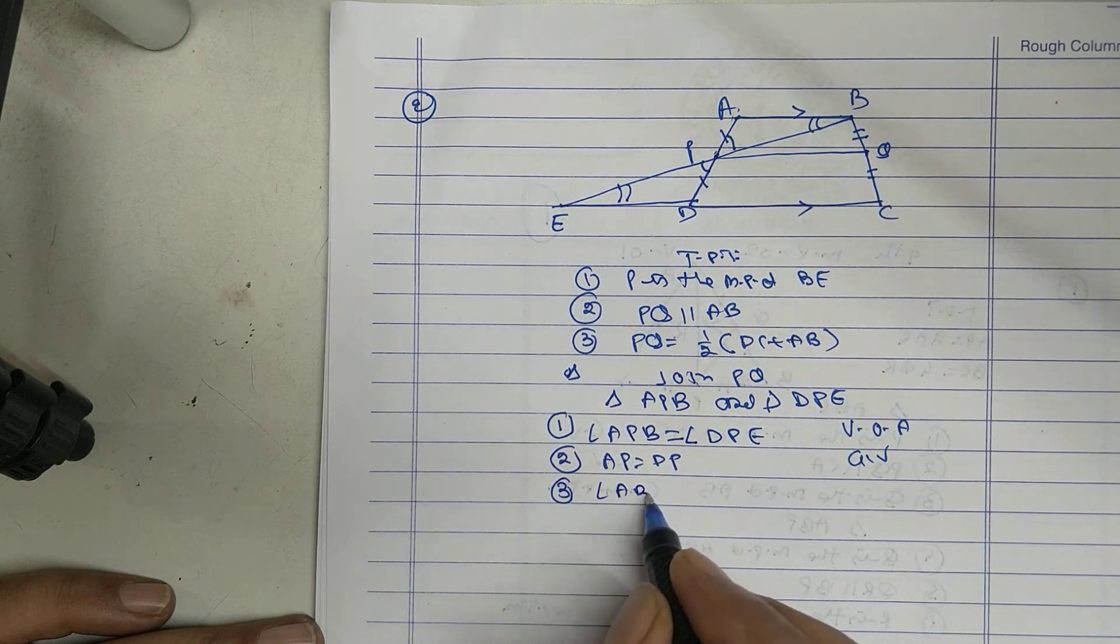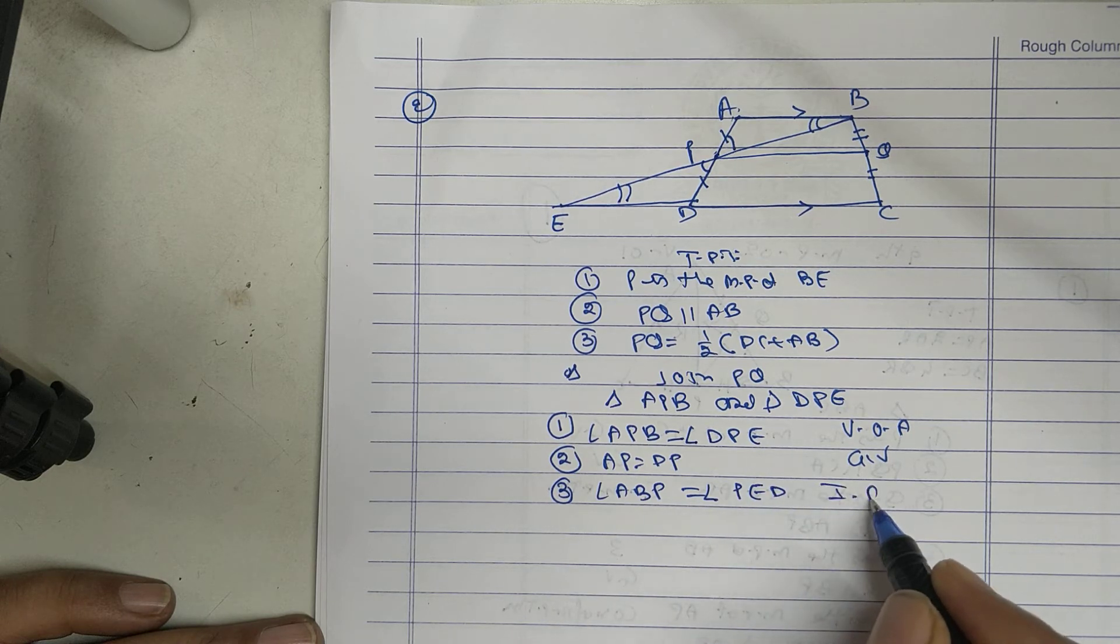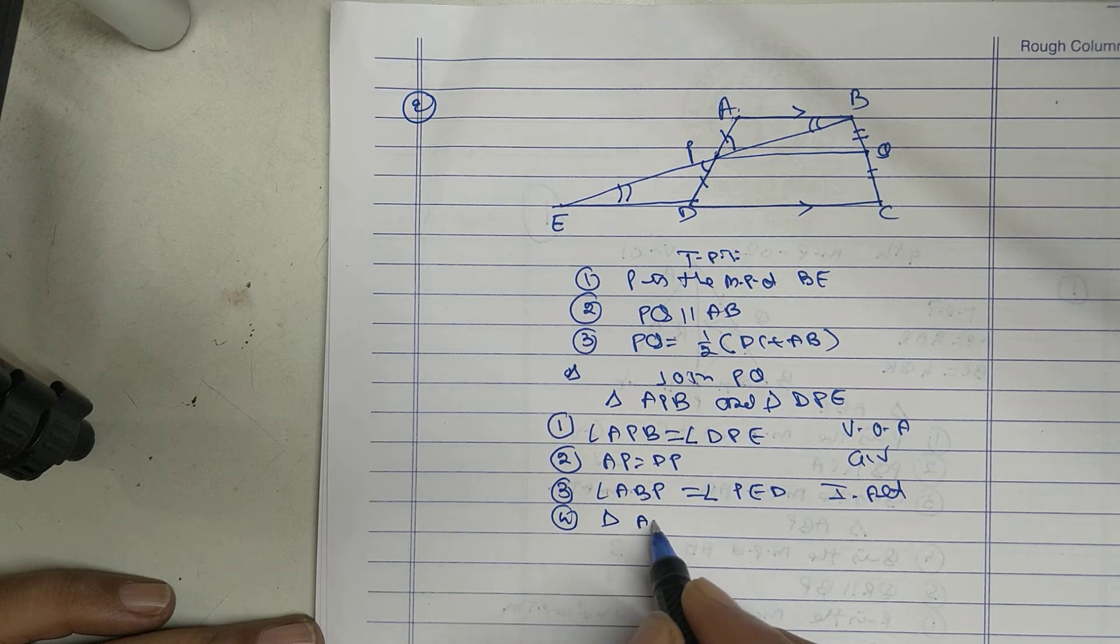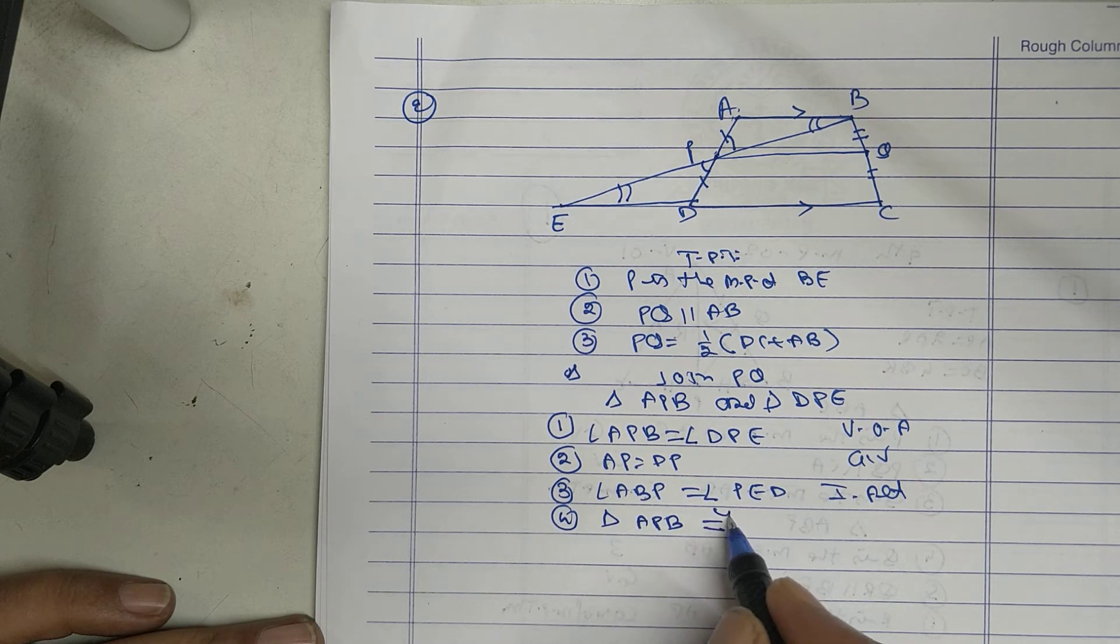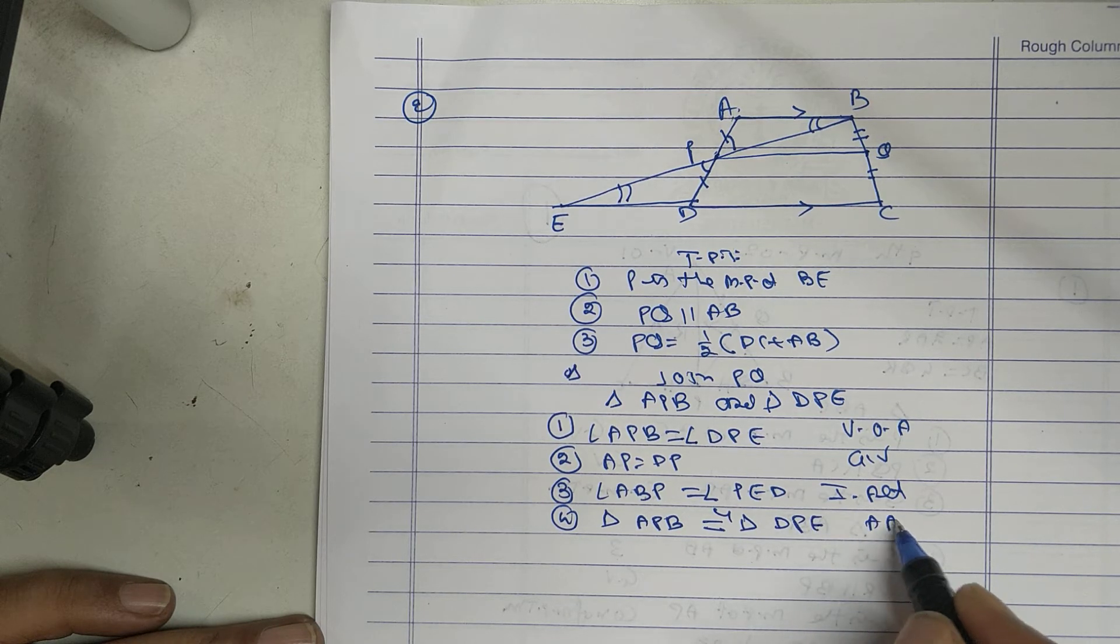Angle BAP equal to PED, interior alternate. Therefore triangle APB congruent to DPE by AAS.